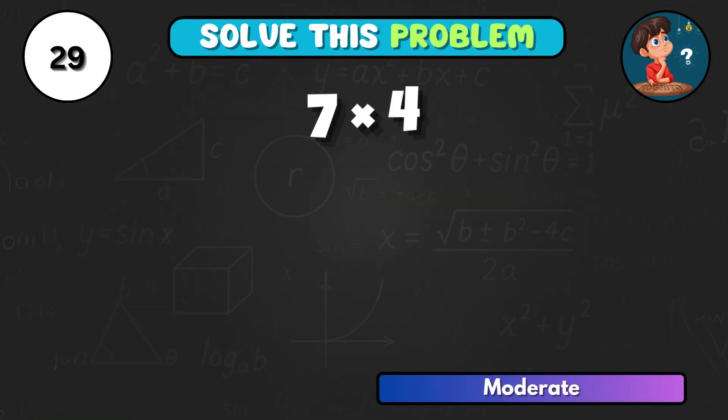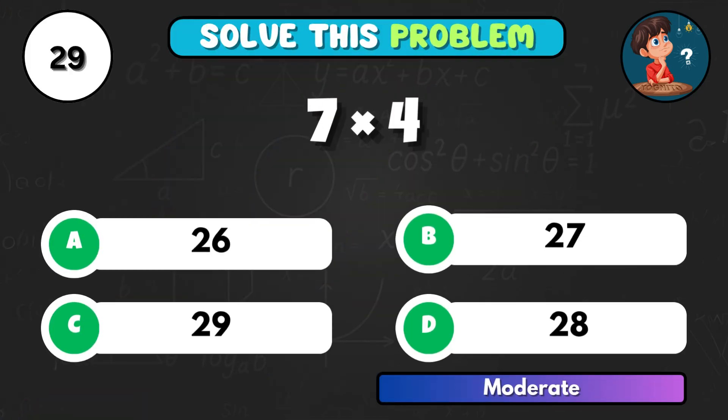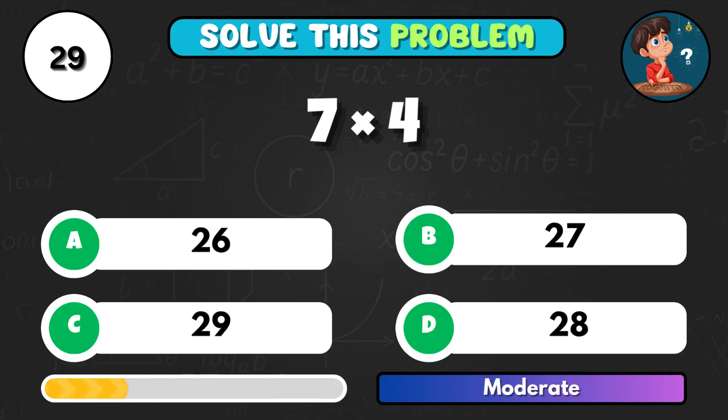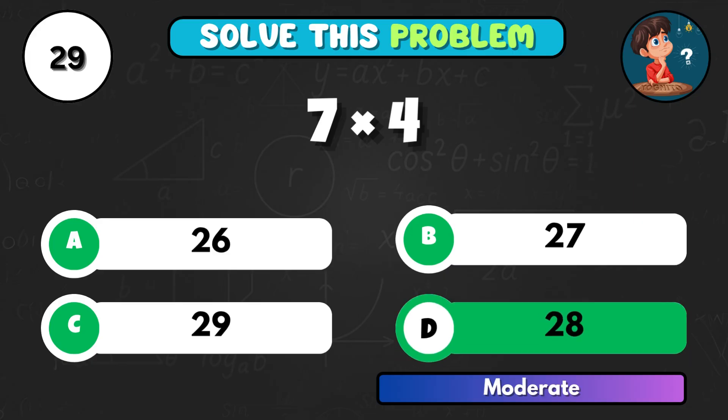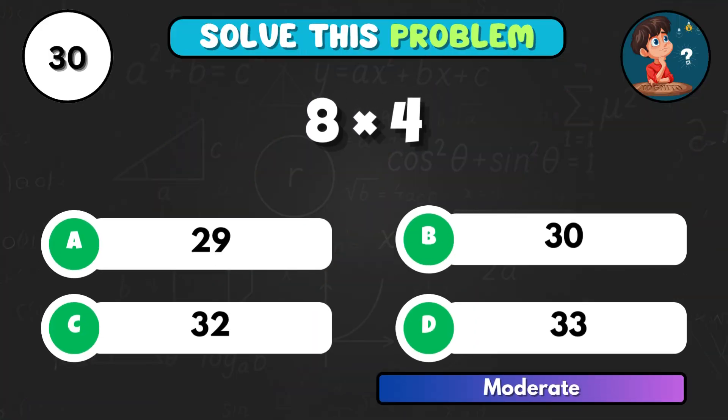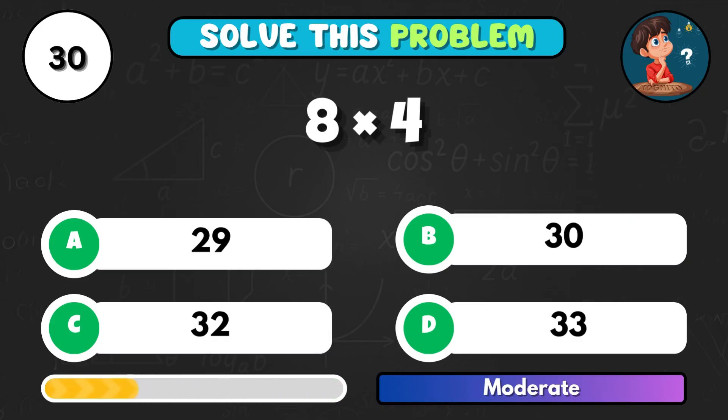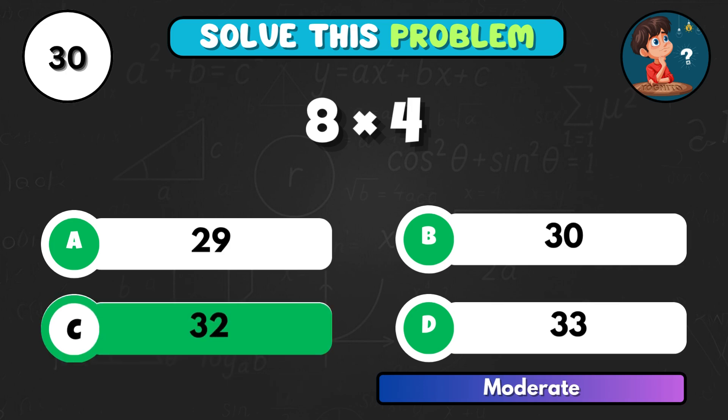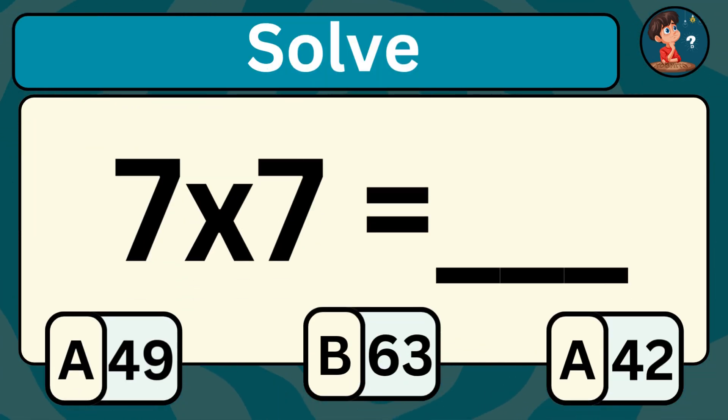7 times 4, what do you think? Option D, giving 28. 8 times 4, what's the total? Correct answer C equals 32. Let's solve this one. What does 7 times 7 equal to?